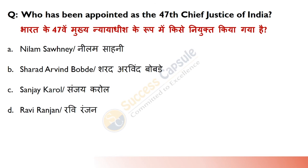Who has been appointed the 47th Chief Justice of India? Answer is B — Sharad Arvind Bobde. The Chief Justice of India and judges of the Supreme Court are appointed by the President as per Article 124.